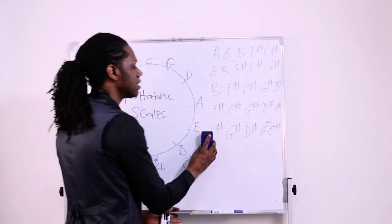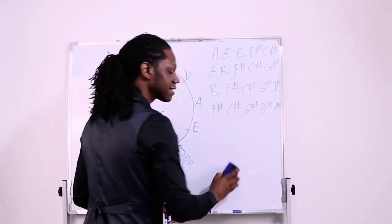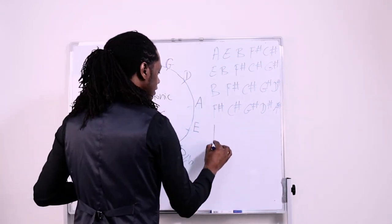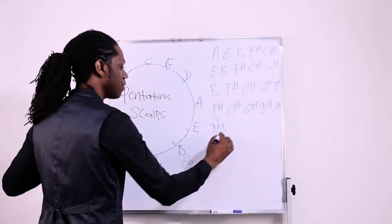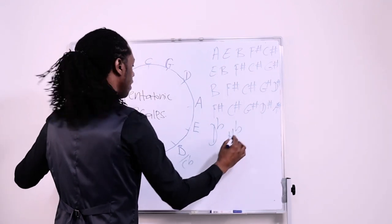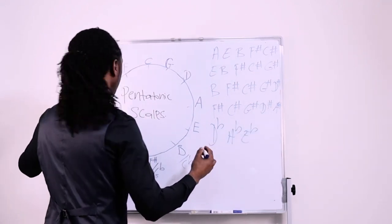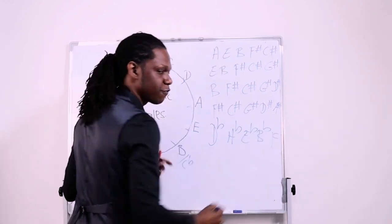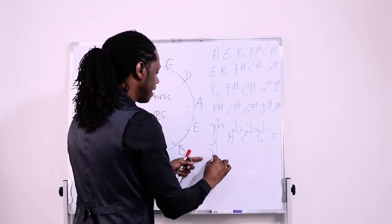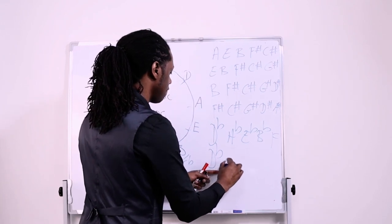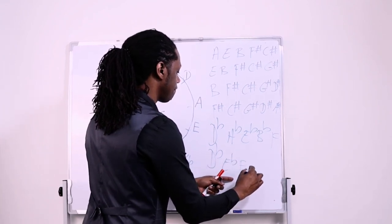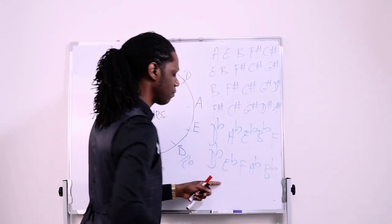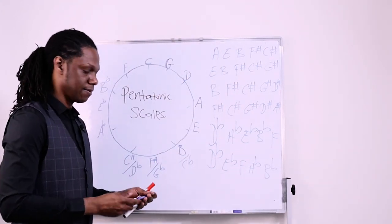We can switch the sharps when we get to the flat side. So from right here at C sharp, we could have done D flat instead of C sharp. Okay? Because, harmonically, those are the same. So you would have D flat, you'd have A flat, you'd have E flat, you would have B flat, and you would have F. And if we reorganize that, it would be D flat, E flat, F, A flat, and B flat. That would be your D flat major pentatonic scale.